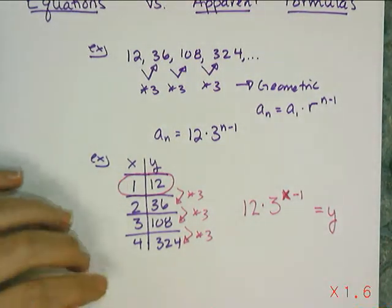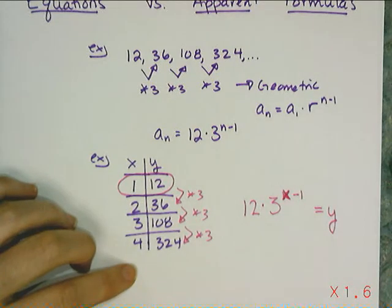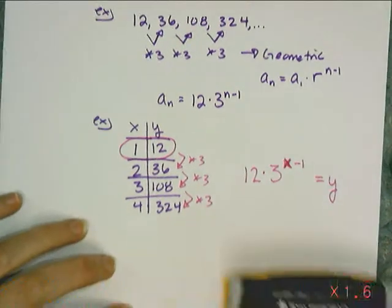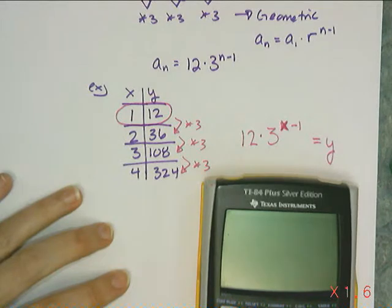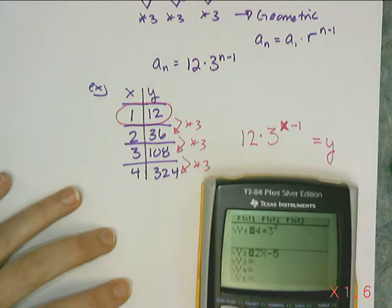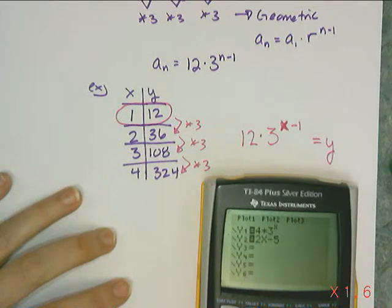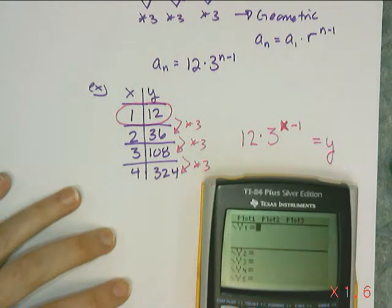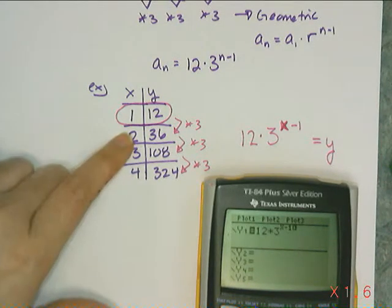And that's going to work perfectly. And I can check by plugging the answers back in, either by using my graphing calculator. I can go to y equals and clear off this stuff I have here because I don't need that. But then type in this equation, 12 times 3 raised to the x minus 1, and it better generate this table.